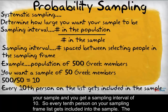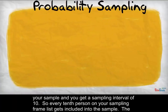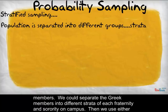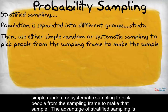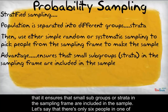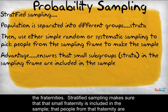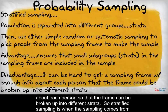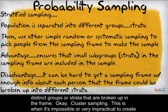The next is stratified sampling. This is when the population is separated into different groups or strata. With our Greek members example, we could separate them into different strata of each fraternity and sorority on campus, then use either simple random or systematic sampling to pick people from the sampling frame. The advantage of stratified sampling is that it ensures that small subgroups or strata are included in the sample — for instance, making sure a fraternity with only six people is represented. The disadvantage is that it can be hard to get a sampling frame with enough information to break the population into different strata.